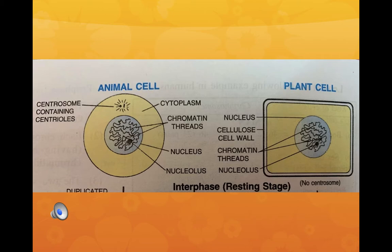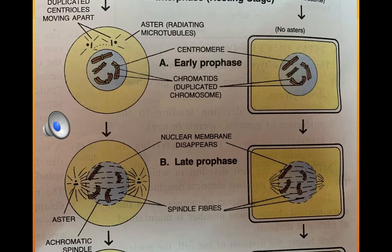In the interphase diagram depicting both animal and plant cells, there is no visible change in chromosomes because this is the resting phase and the nucleus is actively synthesizing DNA. In early prophase, the centrioles have started moving apart towards opposite poles. Chromosomes have become thick, short and distinct, and have duplicated as paired chromatids, also known as sister chromatids, attached at a small constricted region called the centromere.